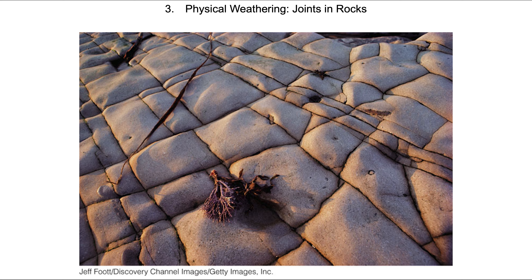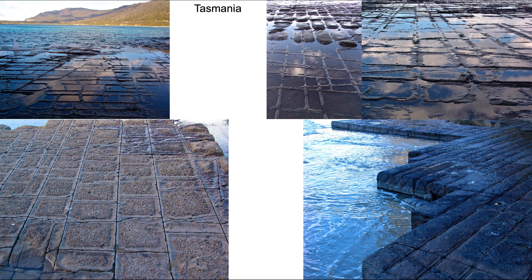We have joint sets in rocks that are induced by pressure regimes, which will force these joint sets to be expressed when the rock begins to weather. Driving through the giant fern forests of Tasmania, we headed along the shoreline and noticed what looked like a strange pavement — but it's natural. These are joint sets introduced into sedimentary rock that are now being weathered chemically and physically.